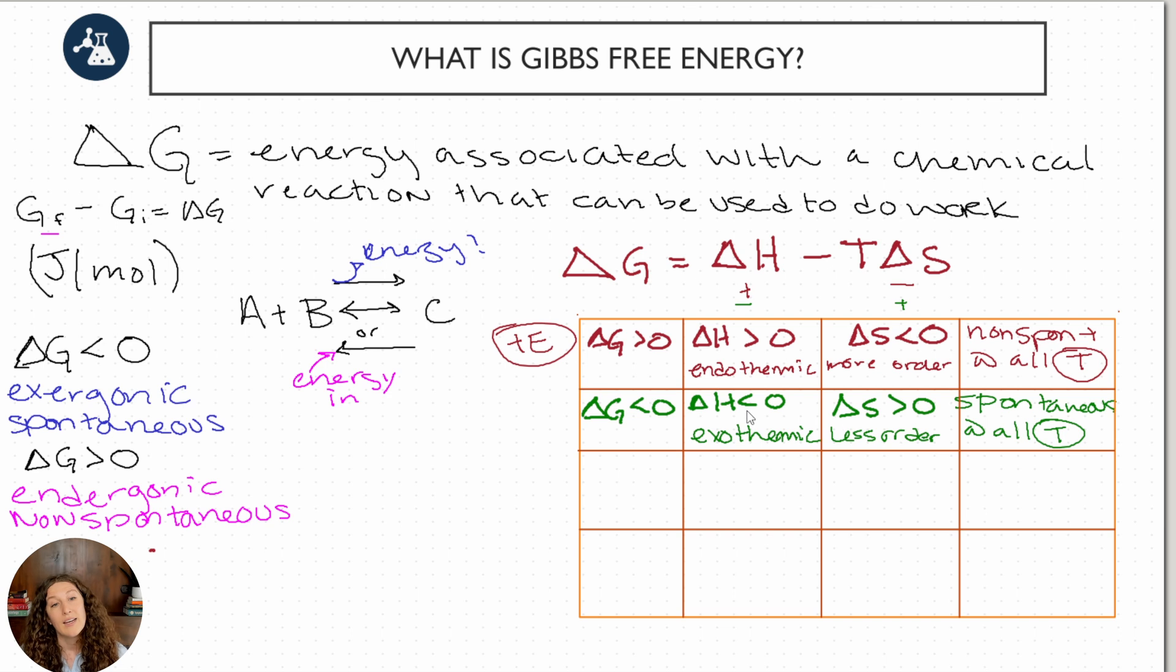And again, for both enthalpy and entropy, write in whatever makes most sense for you. If you need to think about it as positive entropy, increasing disorder, or decreasing disorder, that's fine. If you need to write it as releasing heat for exothermic, absorbing heat for endothermic, that's fine too. Whatever is easiest for you to remember.